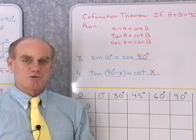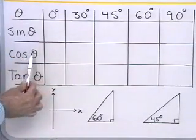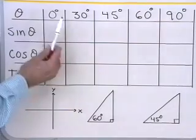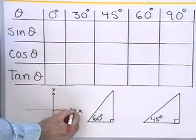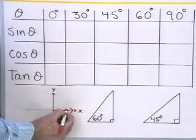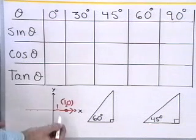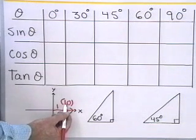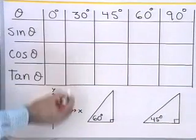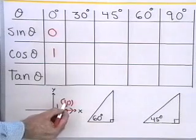Next I want to find exact values for trigonometric functions of the special angles: 0, 30, 45, 60, and 90 degrees — finding sine, cosine, and tangent of each. I'll use both definitions. For 0 degrees, drawing the angle in standard position, a convenient point on the terminal side is (1, 0) with r equals 1. So sine of 0 is 0 over 1, which is 0; cosine of 0 is 1 over 1, which is 1; and tangent of 0 is 0 over 1, which is 0.